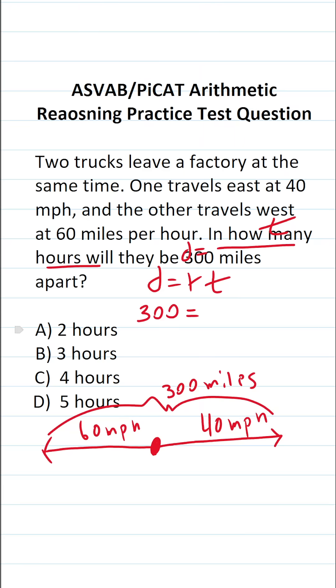Now we have to determine their rate of speed. These two trucks are driving away from each other, so they're driving away at 60 plus 40, or 100 miles per hour.